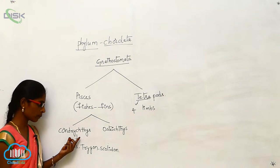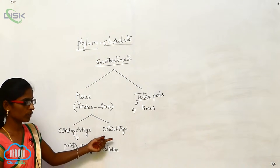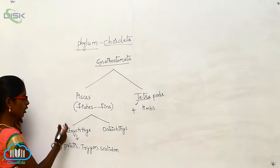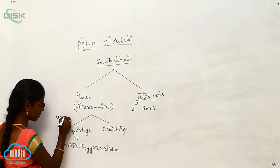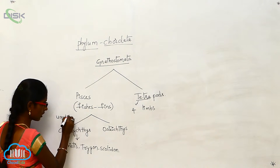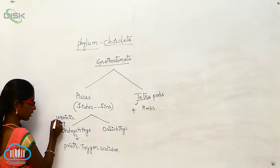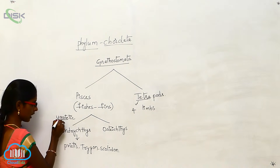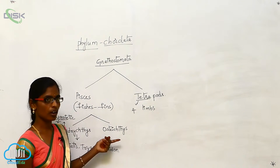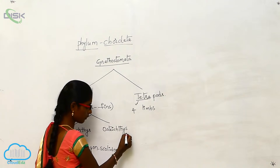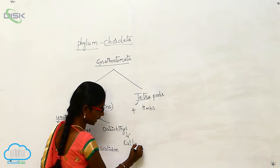Chondrichthyes examples are Pristis, Trigon, and Scoliodon. These Chondrichthyes are ureotelic organisms, meaning their nitrogen waste material is excreted as urea. Osteichthyes examples include Catla and Betta.